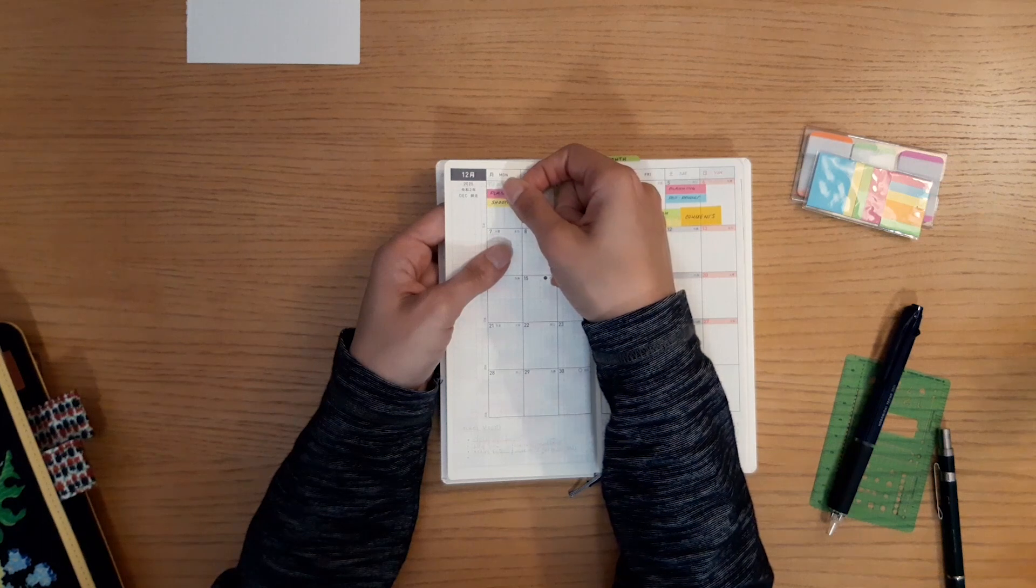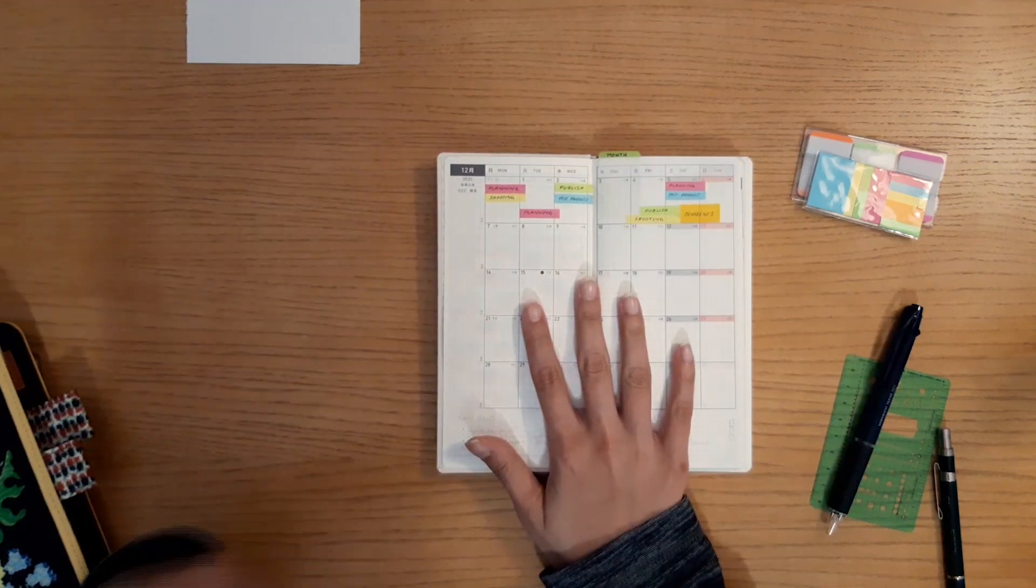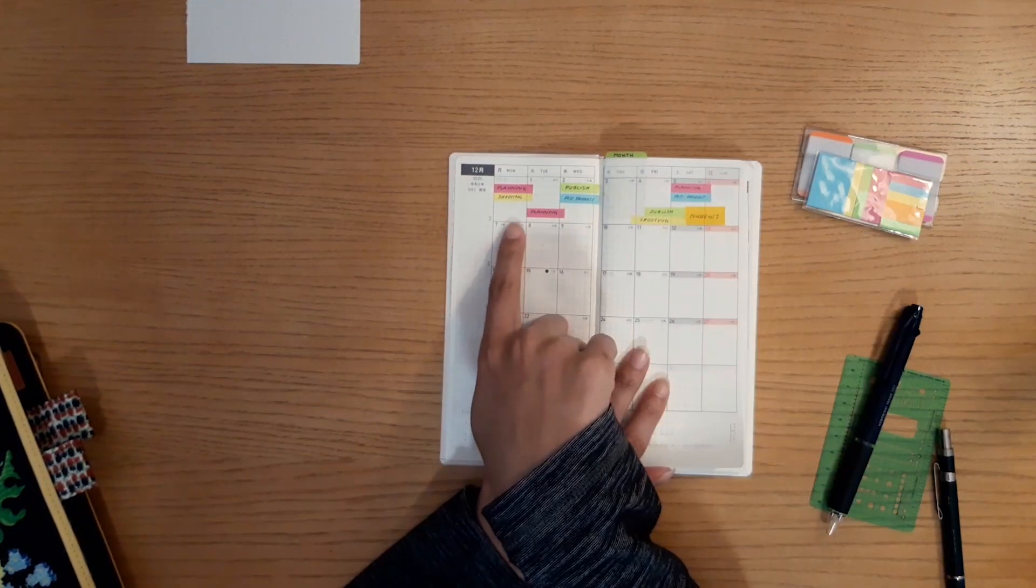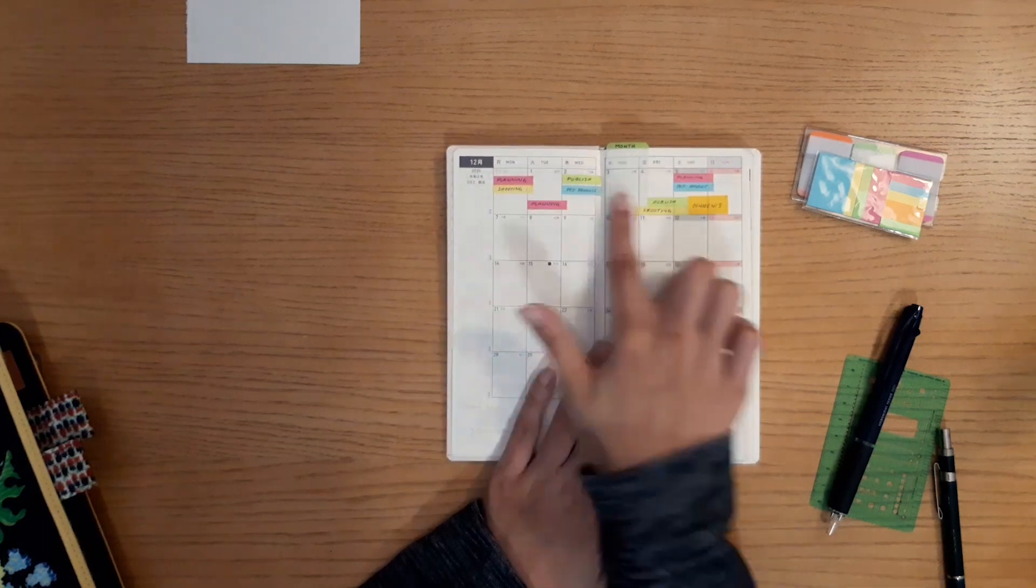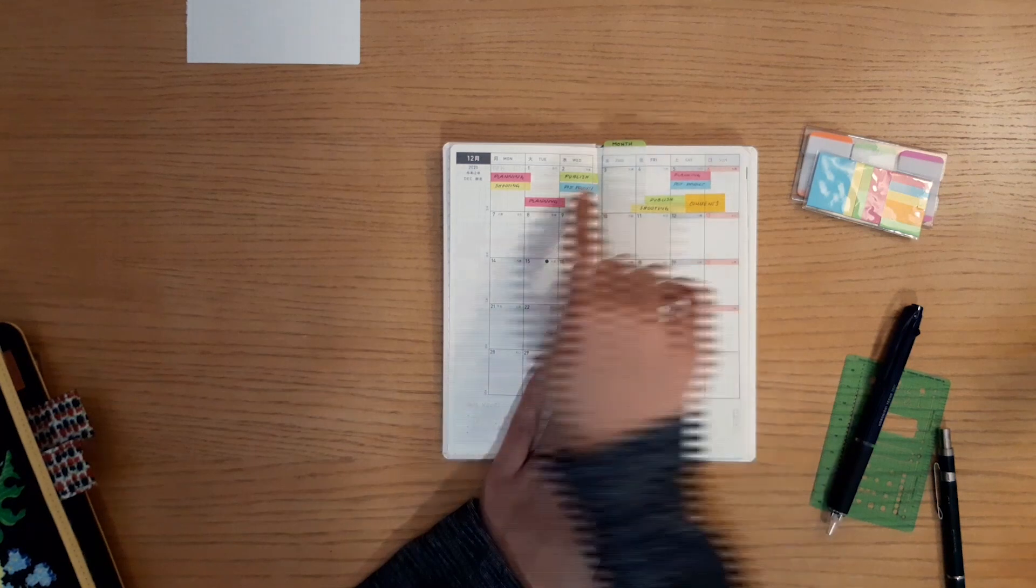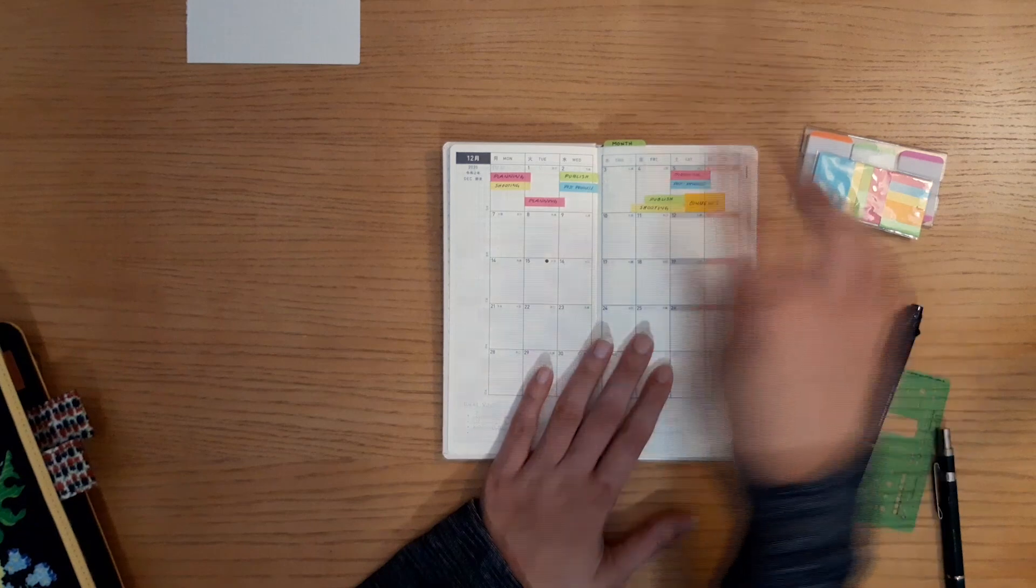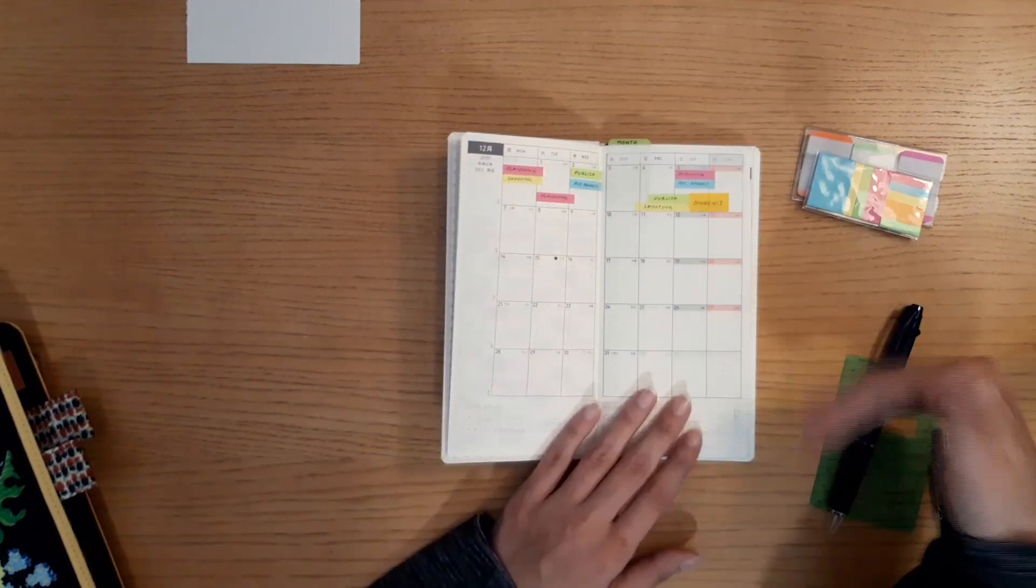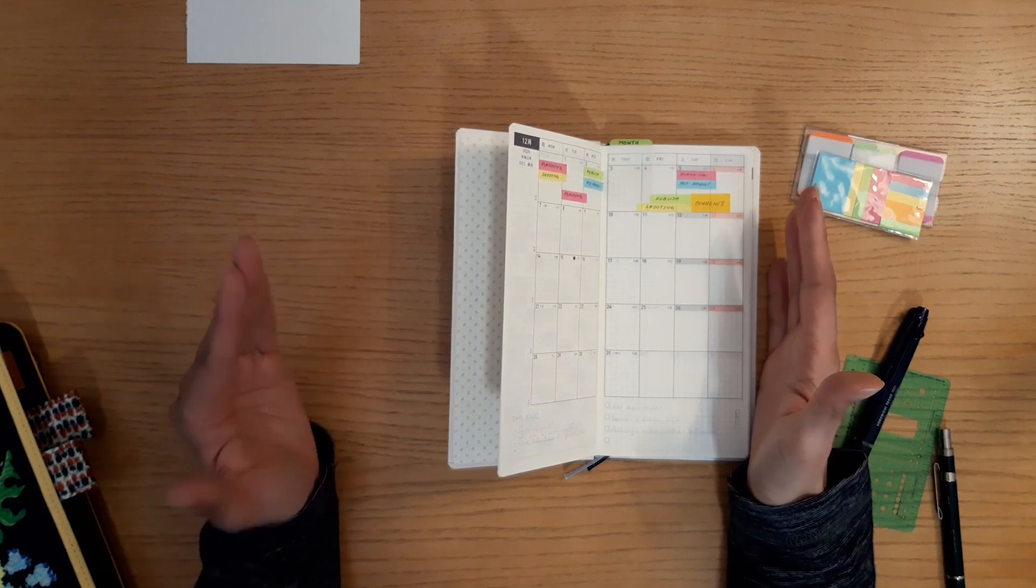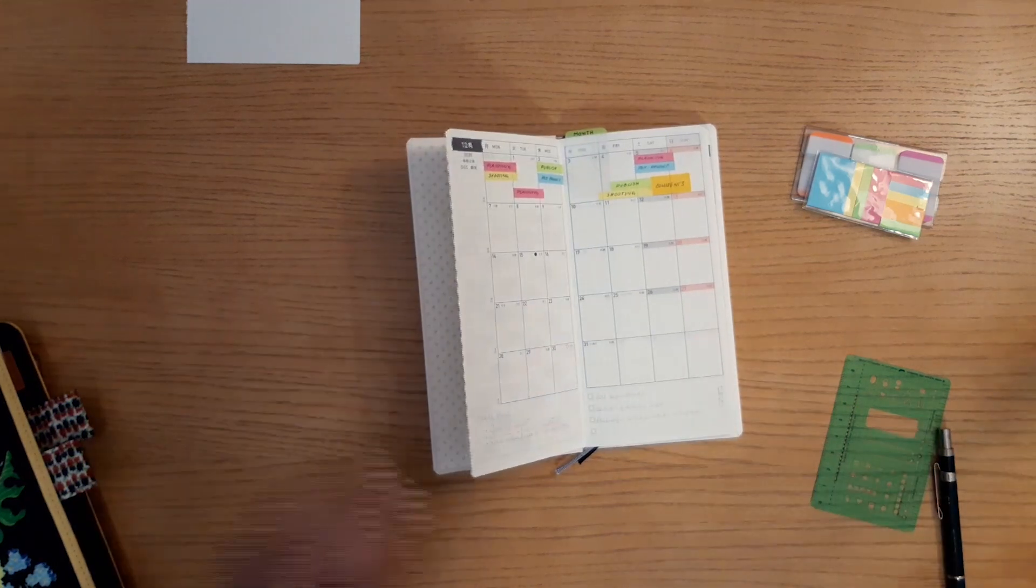This shows me at a glance where I'm at in my process producing content. Right now this is the first week, that's why it only has post-its, because then I move them to the next week and I just mark with pen when I did publish a video. So I can see at the end of the month I have a view at a glance of the videos I published each month.